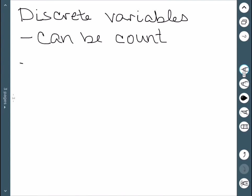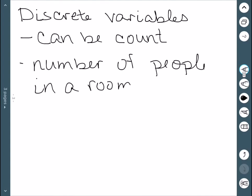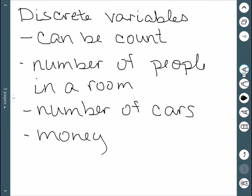For example, the number of people in a room. Another example, if I looked at the number of cars in a parking lot. These are all examples of discrete variables, things that we can count. In addition, money is a discrete variable. It's something that we can count as well.